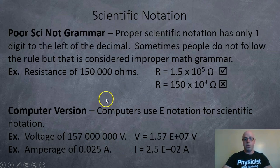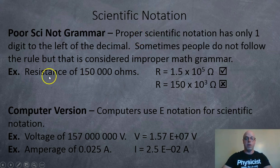Okay. Sometimes people do make mistakes, or sometimes it's just more convenient to ignore the rule. That's fine. So remember, it's supposed to be one digit to the left. But what if you have something like this, a resistance of 150,000 ohms? Well, a proper scientific notation would be to move the decimal over 3, 5 jumps. 1.5 times 10 to the 5 ohms.